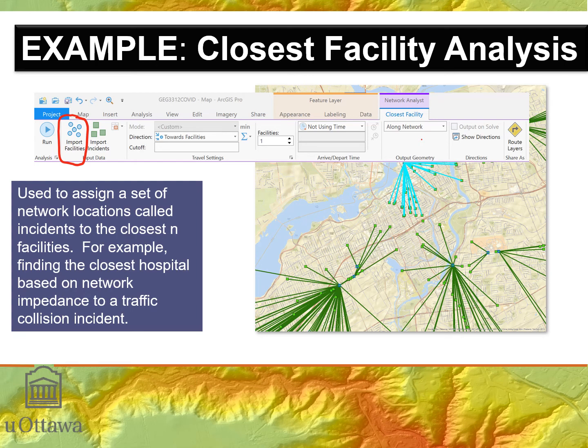Our second example is called closest facility analysis. The idea is very simple: you have locations in space and you want to find the closest facility to those locations. A facility could be a hospital, a clinic, a waste depot — anything in space that you want to travel to from some set of locations. For example, finding the closest hospital based on network distance to a traffic collision incident — emergency vehicle routing is also an application.